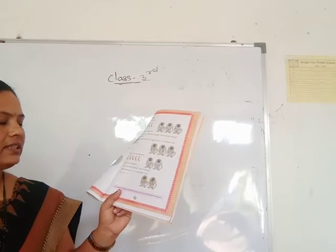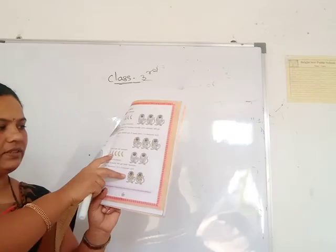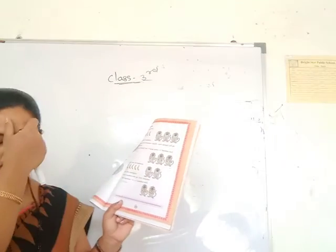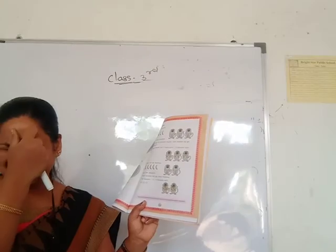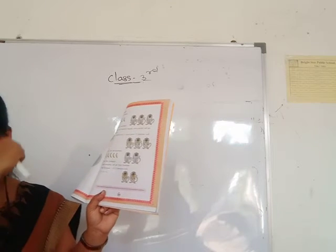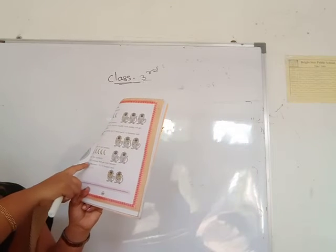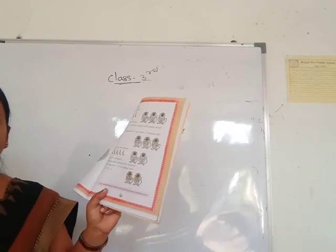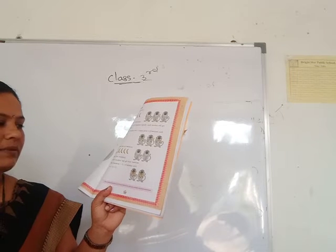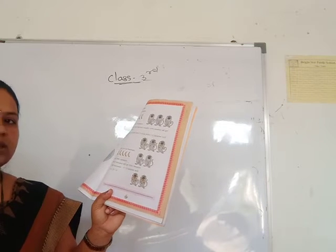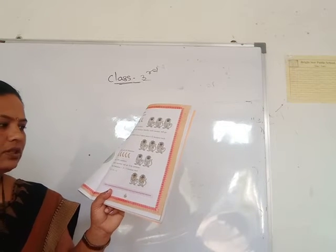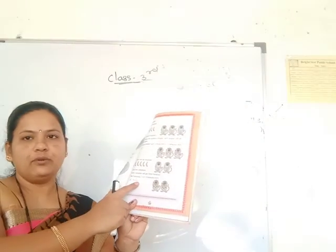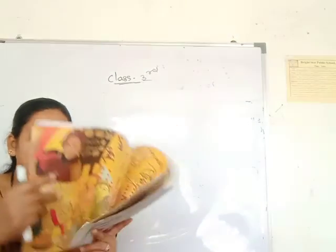If there are six bananas and two monkeys — total six bananas and only two monkeys — then each monkey will get three bananas. Six bananas divided into two: 6 divided by 2 is equal to 3.